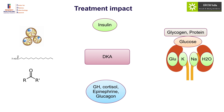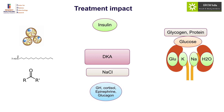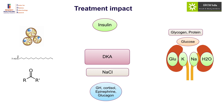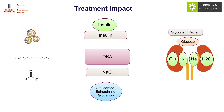Once treatment begins, DKA becomes a complicated situation where treatment itself can cause as many problems as the condition. The first step is hydration using sodium chloride, which decreases counter-regulatory hormones and, along with volume expansion, inhibits glycogenolysis and gluconeogenesis, decreasing glucose by around 150 to 200 mg/dL even without insulin. Once insulin is started, glucose falls further and ketoacidosis resolves, but ketosis will not resolve without insulin. Insulin addition is typically done 1 to 2 hours after initial hydration.